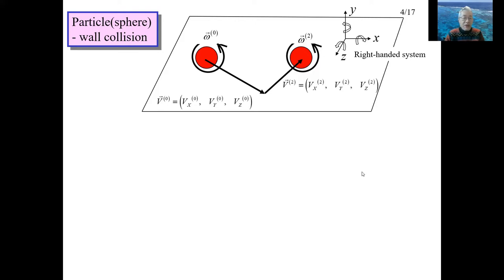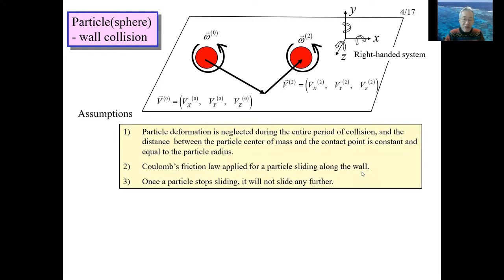In addition to superscripts zero and two, there are other superscripts used, which will be seen later. The assumptions used in the analysis of Lecture 5 are as follows. Assumption 1: during the entire collision period, deformation of the sphere is negligible because it is regarded as a rigid body, so the distance from the sphere center to the contact point is constant and equal to radius a. Assumption 2: Coulomb's friction law is applied to particles sliding along the wall. Assumption 3: once a particle stops sliding, it will not slide again.